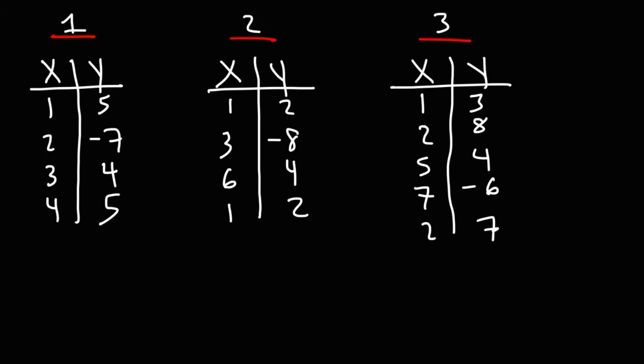Now consider these three function tables. Which one is not a function? Take a minute and analyze those three tables — feel free to pause the video. Looking at the first table, all of the x values are different, so that's going to be a function. You can have the same y value for different x values — that is totally okay. You still have a function here.